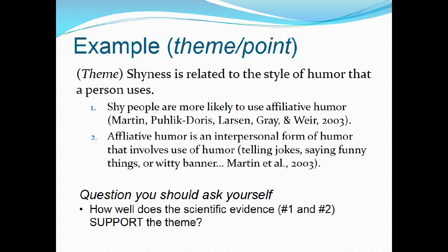I just noticed a typo — affiliative humor, spelled A-F-F-I-L-I-A-T-I-V-E, is an interpersonal form of humor involving jokes, saying funny things, or witty banter. When you look at that second point, hopefully you're thinking: that sounds more like a theoretical definition than evidence to support the theme. One supports it; two is probably something that will show up in your paper as a definition, but it's not necessarily evidence for that particular theme.